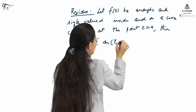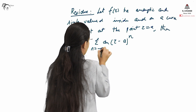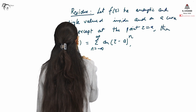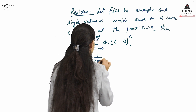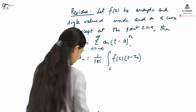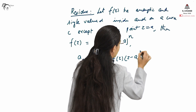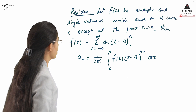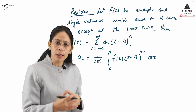The coefficient a_n can be written as (1/2πi) times the integral over C of F(z) divided by (z minus a) raised to the power n+1 dz. This is the Laurent series expansion.